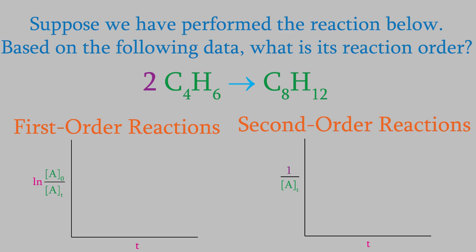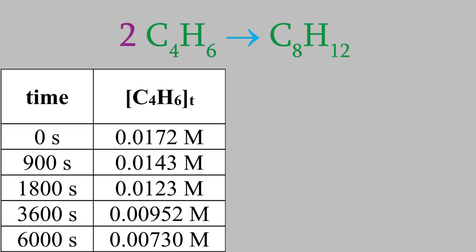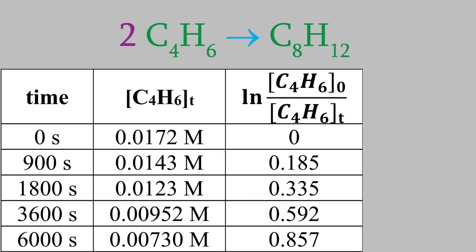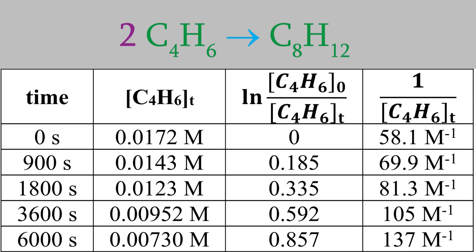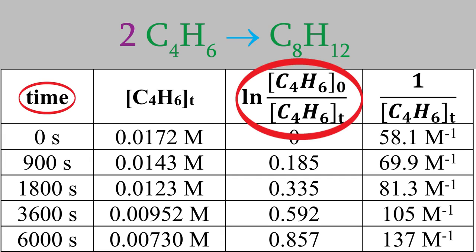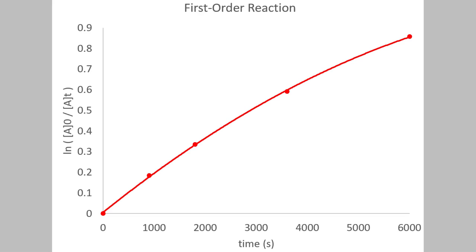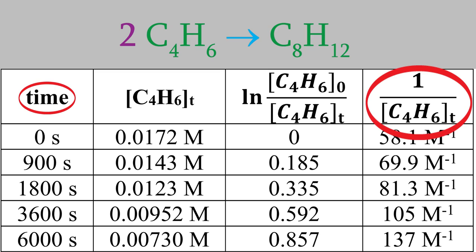Let's make a plot of both of these for our reaction. In order to do that, we need data — we have the time and the concentrations. For the first-order graph, we need to calculate the logarithm of a0 over at, which gives us this column. And for the second-order graph, we need to calculate 1 over at, which is this column. Now we can draw both graphs. I'll plot these two columns to get the first-order graph, which gives us this plot. Next, I'll plot these two columns to get the second-order graph, which gives us this.